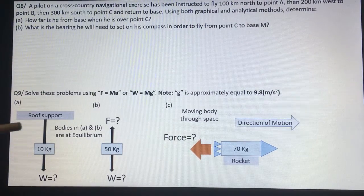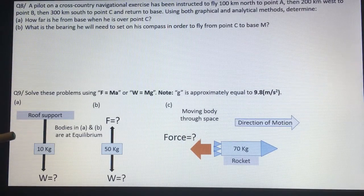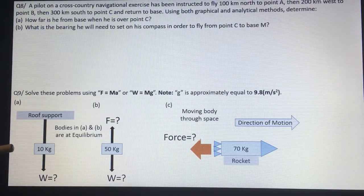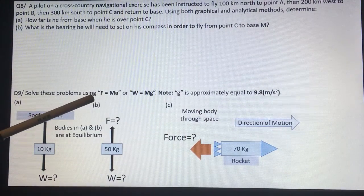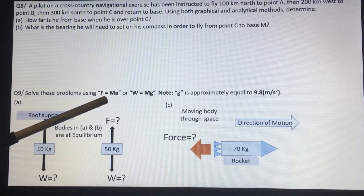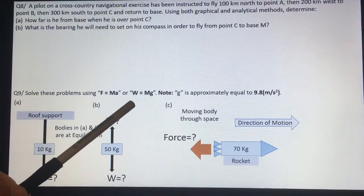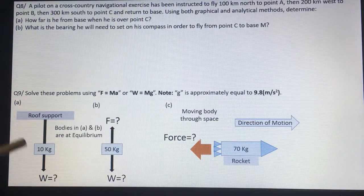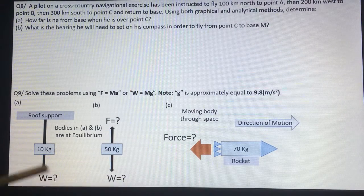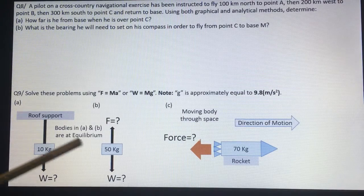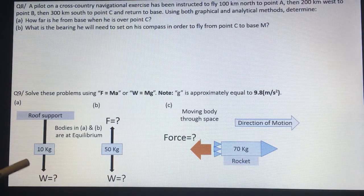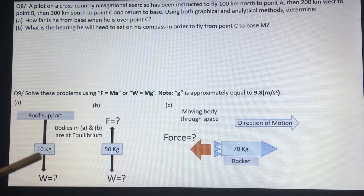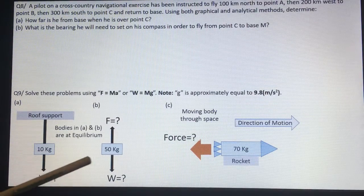Question number nine. This is a revision from the lectures about force that equals mass times acceleration, or you can use weight that equals mass times gravity acceleration. So there are a couple of questions here for you to answer. These two questions here are in a static equilibrium state. So that means that it's not moving. The mass is not moving.